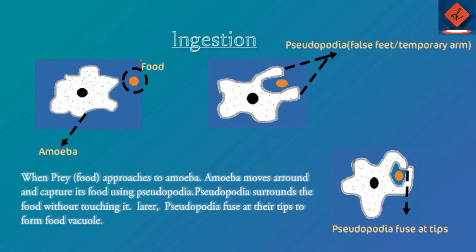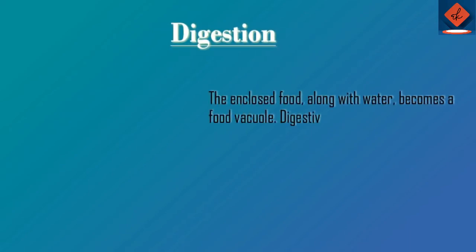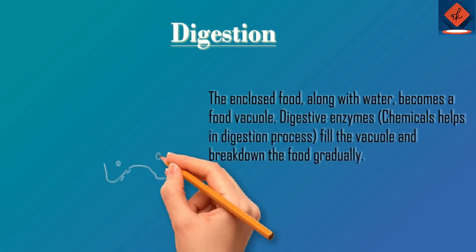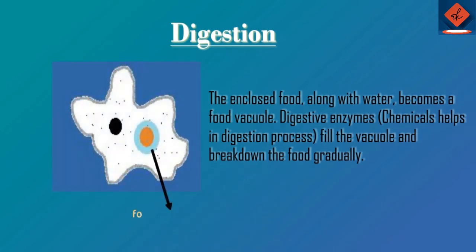When the amoeba is in water, water also comes inside along with the food. That is called a food vacuole. The next step is digestion. The enclosed food along with water becomes a food vacuole, and digestive enzymes act upon it.